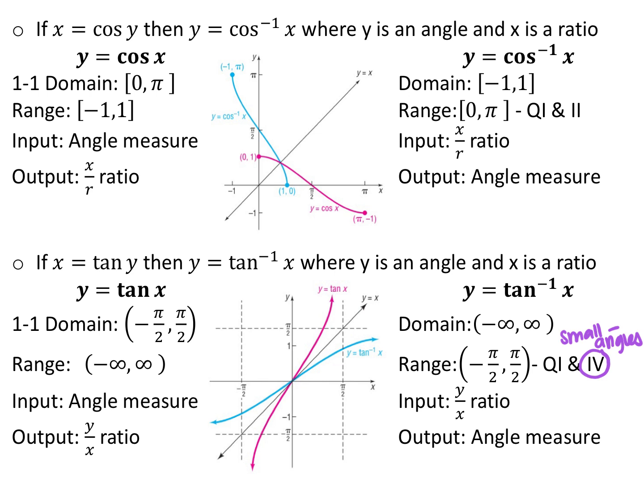For tangent: if x equals tangent of y, then y equals tangent inverse of x. To make tangent one-to-one, we limit it between one set of asymptotes — from negative pi over 2 to pi over 2 — and the range is all real numbers. Input is your angle measurement, output is your y over x ratio. For tangent inverse, domain and range switch: domain is all real numbers, and range is negative pi over 2 to pi over 2, not included. Like sine inverse, answers are in quadrants 1 and 4, with fourth-quadrant angles labeled as small negative angles.